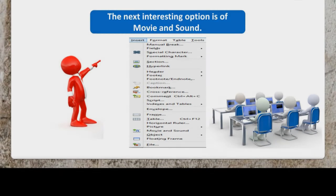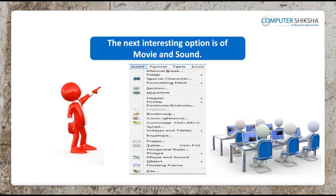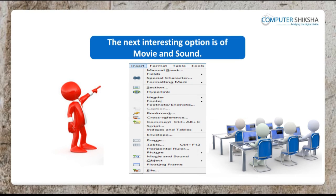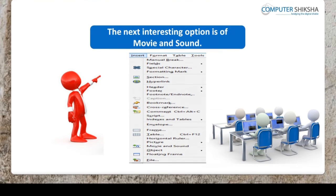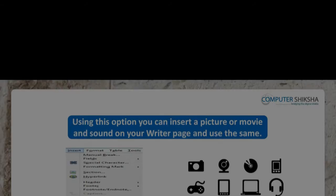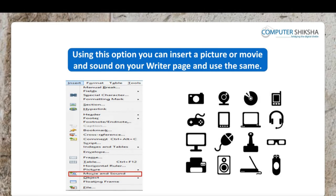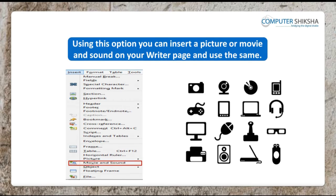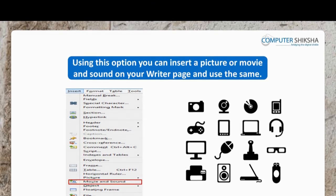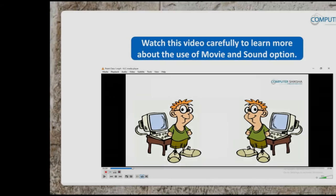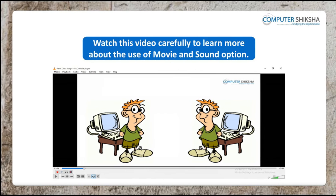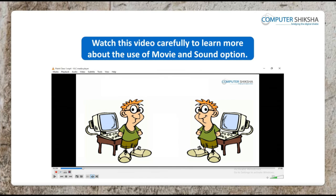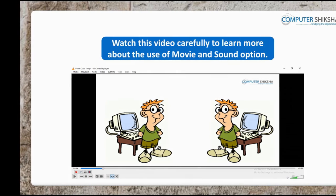The next interesting option is of Movie and Sound. Using this option, you can insert a picture or movie and sound on your writer page and use the same. Watch this video carefully to learn more about the use of the Movie and Sound option on a writer page.